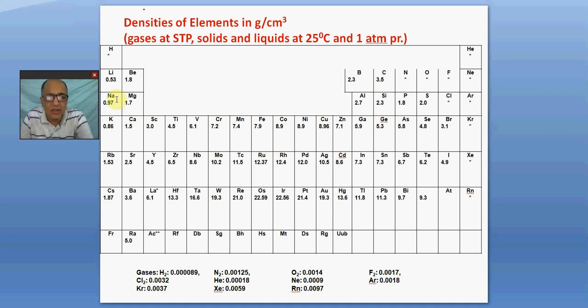And similarly in the third period, sodium is 0.97, magnesium 1.7, aluminum 2.7, silicon 2.3. Up to aluminum it increases, thereafter decreases. Again in the fourth period, among s-block also increases and continues to increase up to copper. You find there is a consistent increase up to copper, after which it decreases.